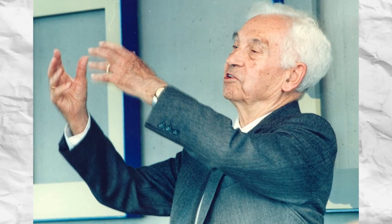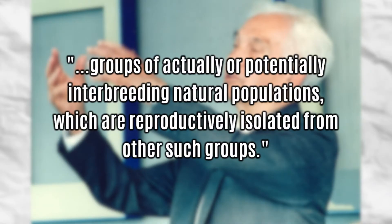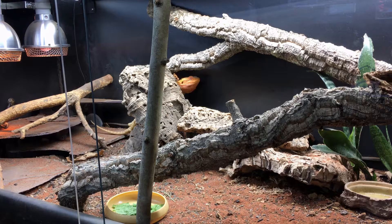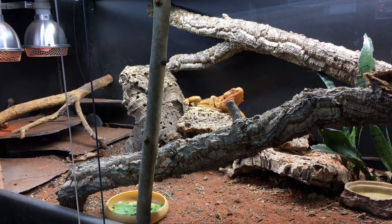This states that species are groups of actually or potentially interbreeding natural populations, which are reproductively isolated from other such groups. By this definition, an individual bearded dragon and an individual leopard gecko are members of different species because they couldn't breed with each other to produce fertile offspring.